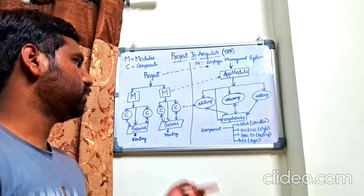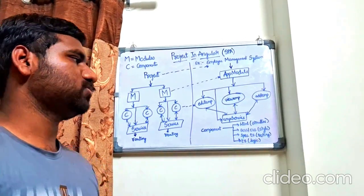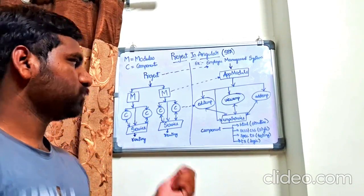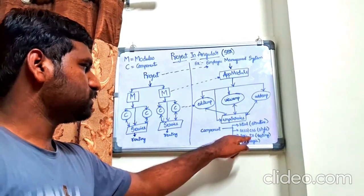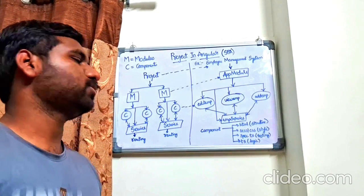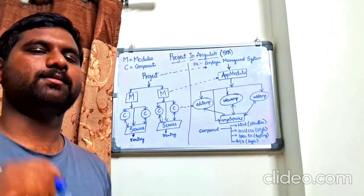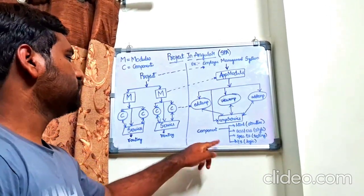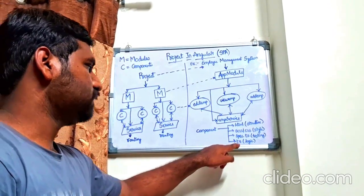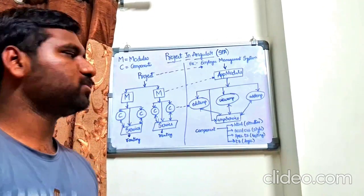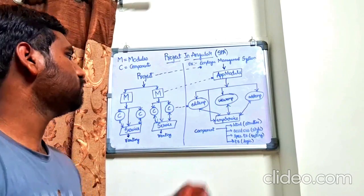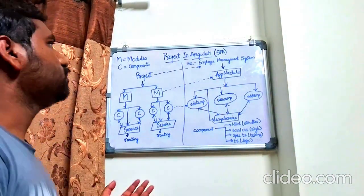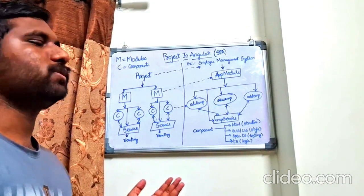The spec.ts file is used to perform unit tests on the project — this is going to play a huge role for testing at the end of the project. And the last one is the .ts file, which is nothing but TypeScript — the logic we are going to give to the structure. This is the overall view of the Angular project which we are going to build.